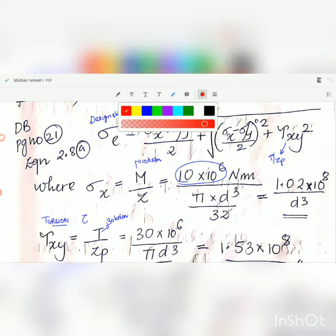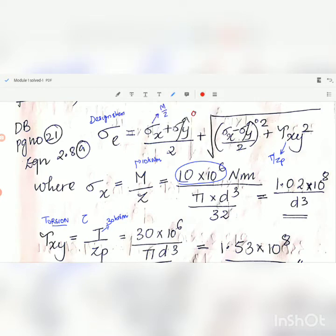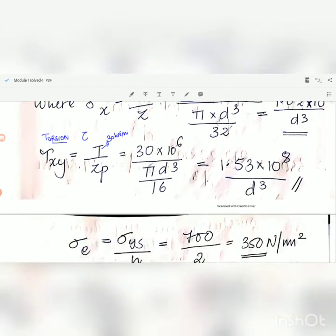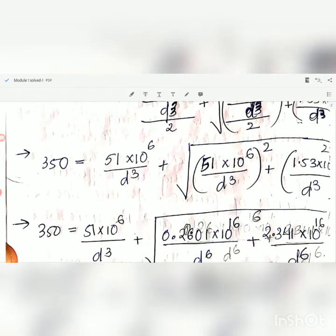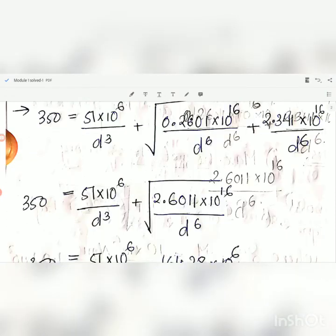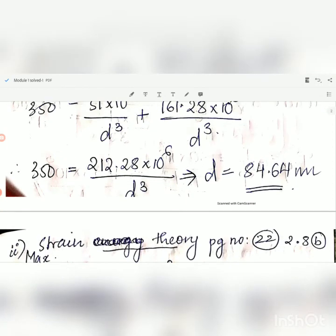We can see that sigma y turns to 0, so this term cancels out, and now we can find the value of diameter. You can substitute in the equation, you will be getting the diameter equal to 84.64 mm.